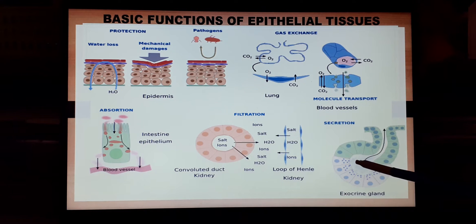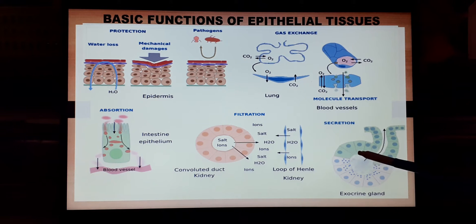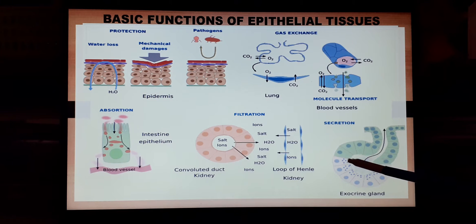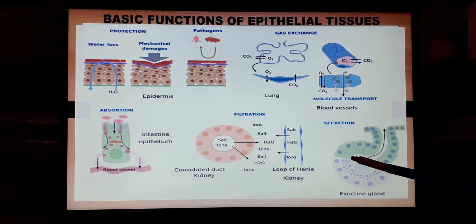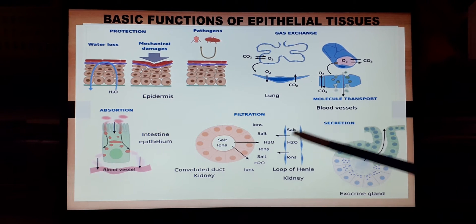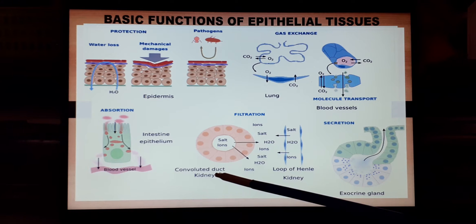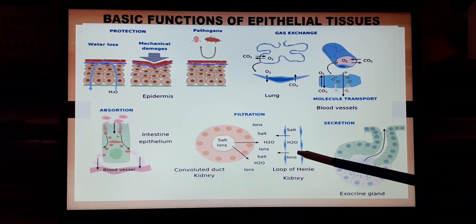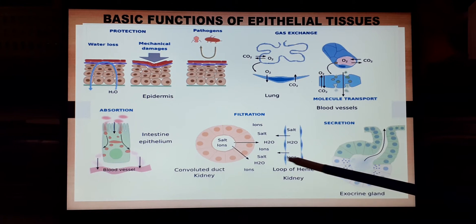Epithelial tissue lines the endocrine as well as exocrine glands — such as sweat glands, sebaceous glands, tear glands, mammary glands, thyroid gland, and pancreatic glands — helping in secretion. In the kidney, they also play an important role in exchange of material during urine formation and filtration of blood.